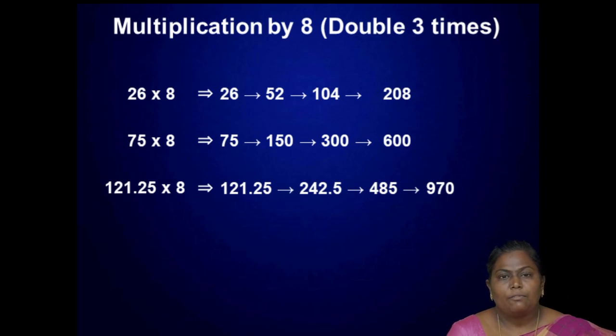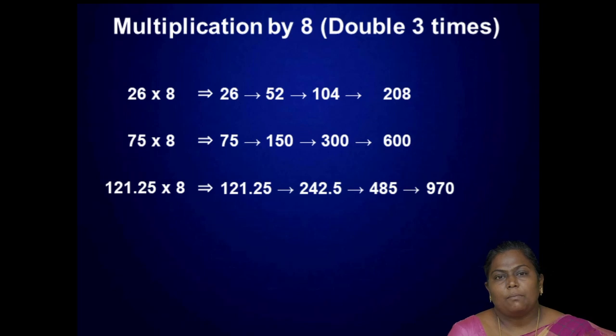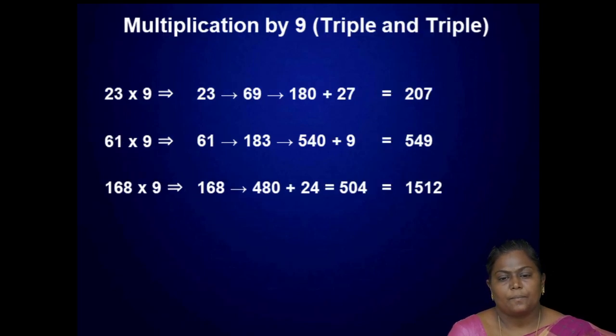Similarly, for 75 multiplied by 8: first double 75 to get 150, next double to get 300, next double to get 600.